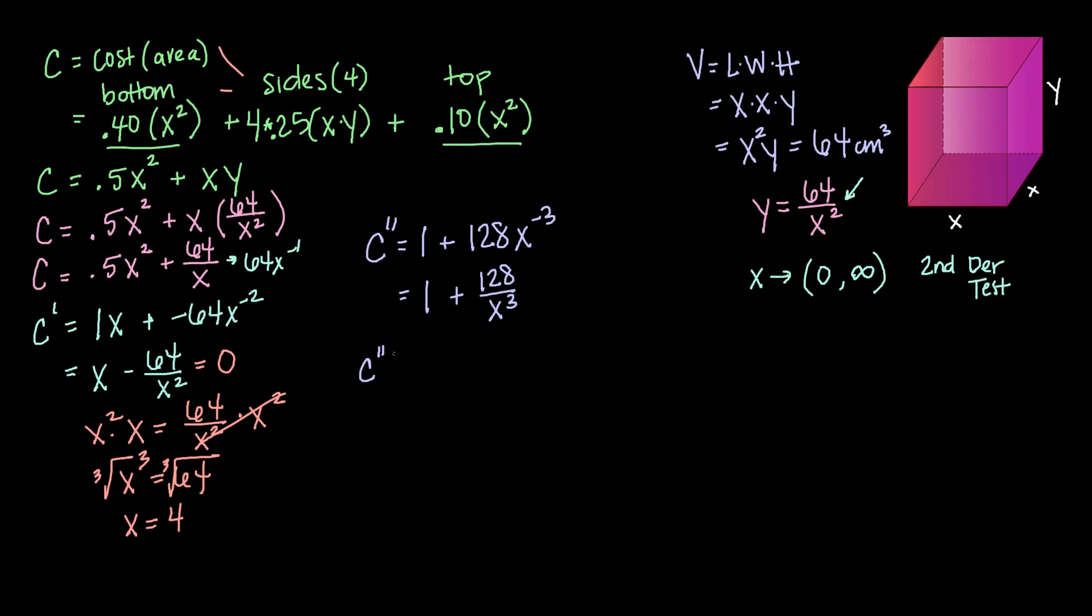So now we want to evaluate c double prime or our second derivative at our critical point to see is it a positive value or a negative value. So 128 over 4 cubed, that will be 1 plus 128 divided by 64, which is 1 plus 2, which is 3. 3 is certainly a positive value. So our second derivative tells us that at 4, our function is concave up. So we are achieving our minimum.